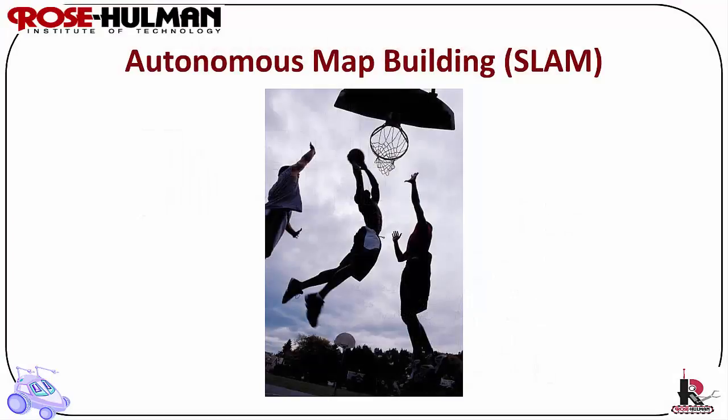Autonomous map building, or SLAM: a robot that localizes successfully has the right sensors for detecting the environment, and the robot ought to build its own map. Starting from an arbitrary initial point, a mobile robot should be able to autonomously explore the environment with its sensors, gain knowledge about it, interpret the scene, build an appropriate map, and localize itself relative to this map.